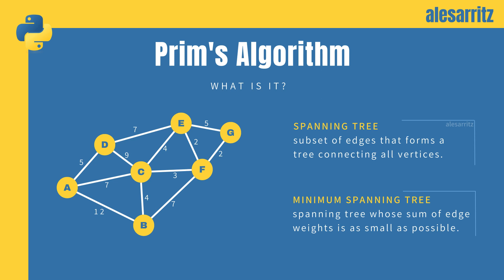To understand the algorithm, it's important to remember that a spanning tree of a connected graph is a subset of edges that forms a tree connecting all vertices, while a minimum spanning tree is the spanning tree whose sum of edge weights is as small as possible.